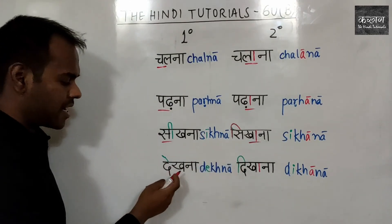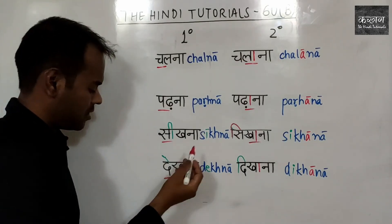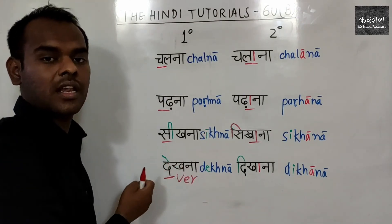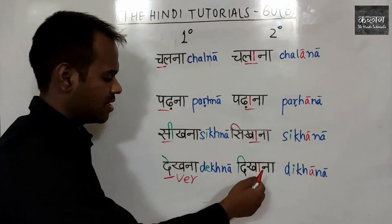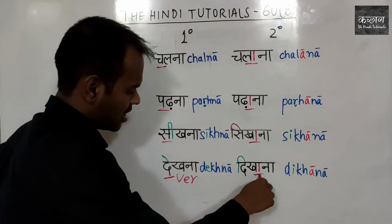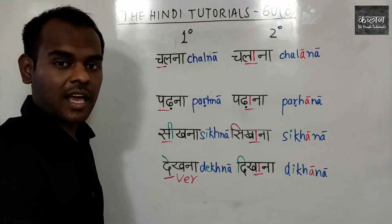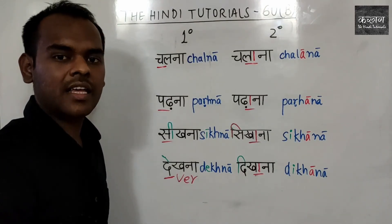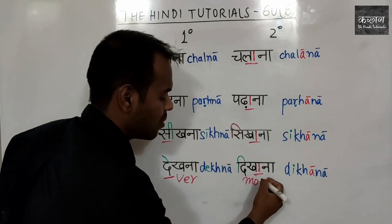Último ejemplo: dekhna, que es ver, tiene una vocal larga en la primera posición. Para mover el estrés, reemplazamos la vocal larga 'e' con una vocal corta 'i' — di — y agregamos 'a'. Dekhna se cambia a dekhana. ¿Qué significa dekhana? Hacer que alguien vea, que es igual que mostrar. Dekhna es ver y dekhana es mostrar.